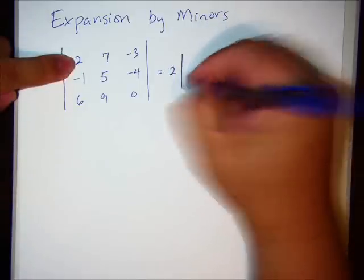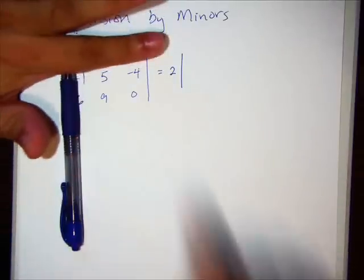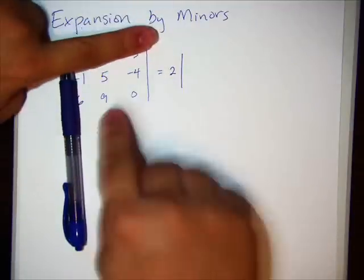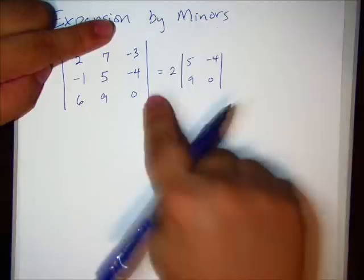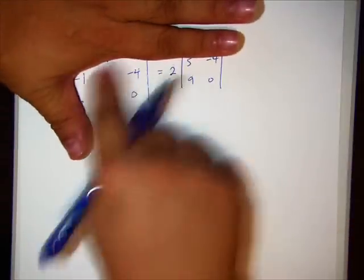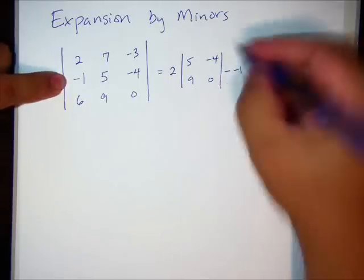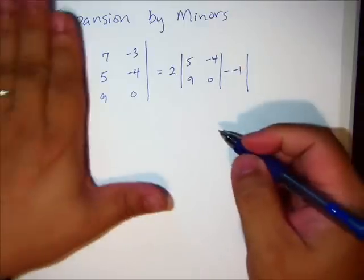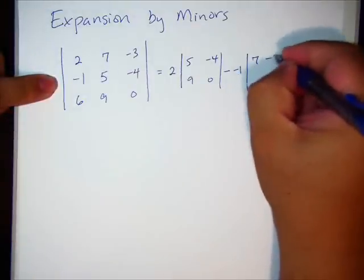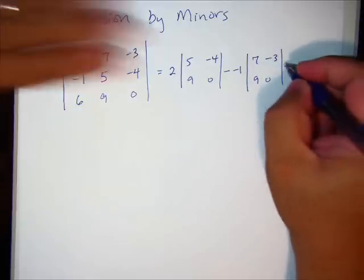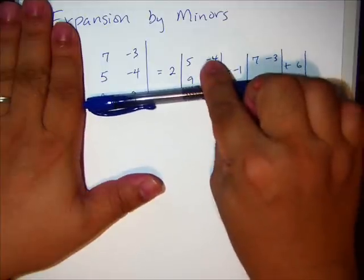You're going to cross out the column and row that that number is in. The 2 is here. And I'm left with a 2 by 2 matrix. We're going to find that determinant. So it's 2 times the determinant of the matrix that's left. Minus. This minus is actually separate from this negative 1. I'm going to explain where that minus sign comes from later. So if I take out the negative 1, I'm going to have 7, negative 3, 9, 0 as my remaining matrix. Plus, I'm going to use the 6. And then the determinant form there is 7, negative 3, 5, negative 4.